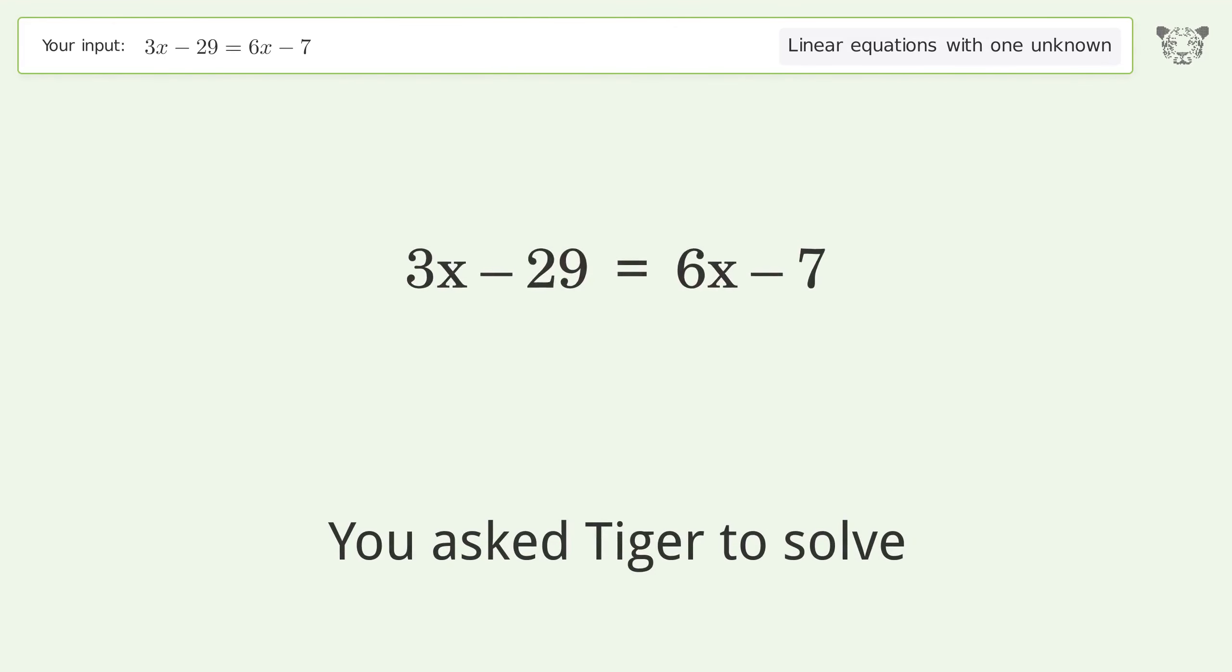You asked Tiger to solve this, which deals with linear equations with one unknown. The final result is x equals negative 22 over 3.